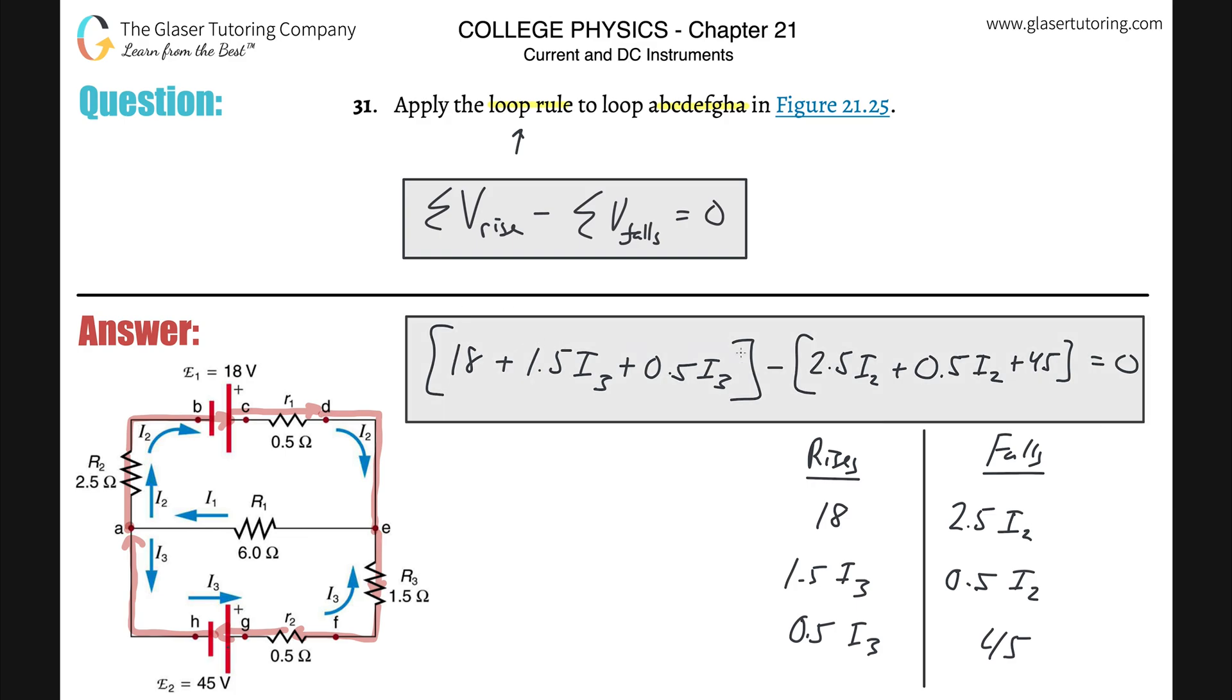Now you can distribute the negative sign if you like. That's fine with me. Those are then all going to represent negative values, or you're going to subtract all of this. It doesn't matter. That's just algebra now. So, you know, as far as the physics, the problem's over. All right, so this is how you would apply loop rule to this particular circuit.